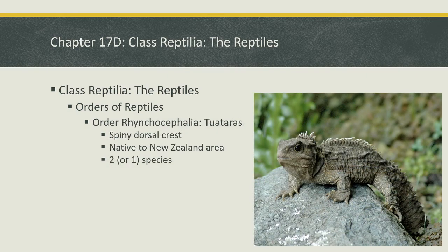Finally, we have Order Rhynchocephalia — the tuataras. Tuataras look a lot like lizards but have what's called a spiny dorsal crest — that ridge of little spiny things along their back. They're native to New Zealand and some of the surrounding islands. There are either one or two species, depending on how you look at it — traditionally considered two species, but some sources consider them one. And that is our whole bird's-eye look at the reptiles.